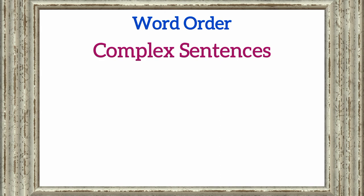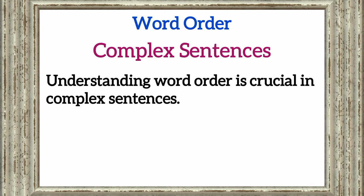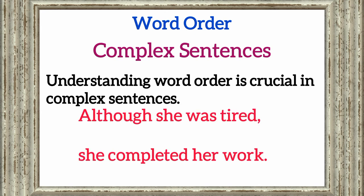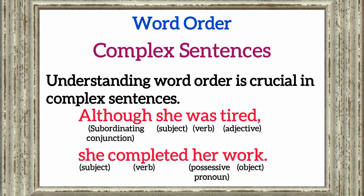Let's move on to complex sentences. Understanding word order is crucial in complex sentences. For example, 'although she was tired, she completed her work.' In this sentence, 'although' is a subordinating conjunction, 'she' is the subject, 'was' is the verb, 'tired' is an adjective, 'she' is the subject of the main clause, 'completed' is the verb, 'her' is a possessive pronoun, and 'work' is the object.